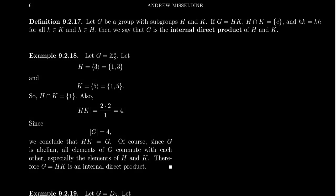Let G be a group with subgroups H and K inside of G. Suppose that the Frobenius product H times K equals the whole group G. Further, suppose that the intersection of H and K is trivial — that is, the only thing common to both H and K is the identity.